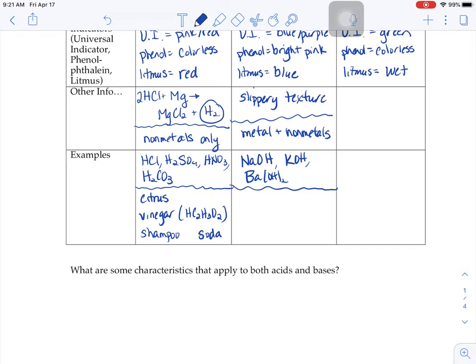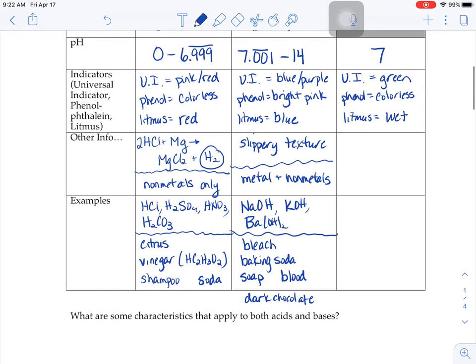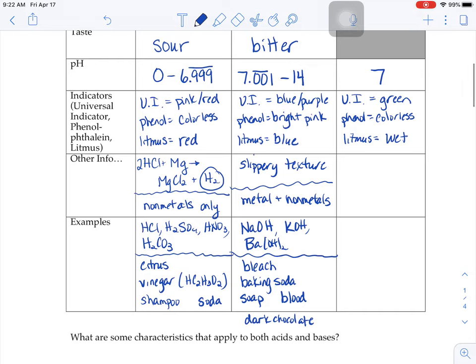What about household base examples? Bleach could be one. Baking soda, you know, from your cookie project is a basic substance. Soap that has that slippery texture to it. Your blood is just a little bit on the basic side. And this one's kind of fun: dark chocolate. I'm betting some of you that are watching this video like dark chocolate and some of you don't. And the people who don't like dark chocolate, it's usually because they say it's too bitter, the sign of a base.